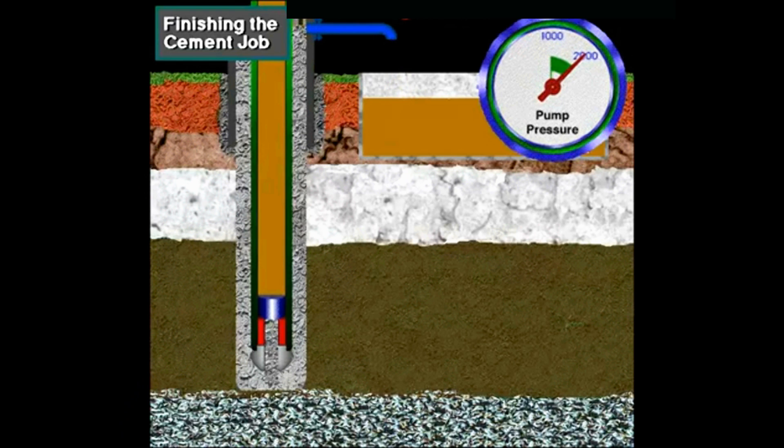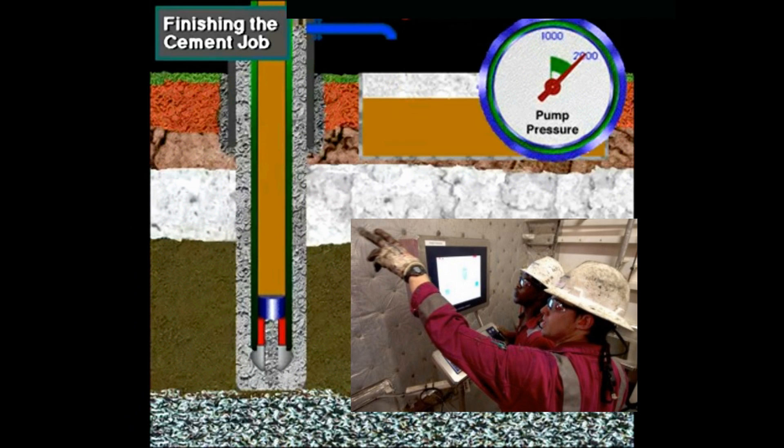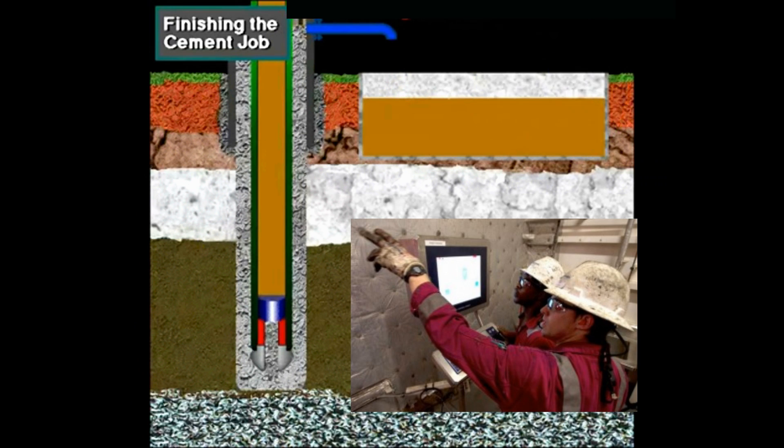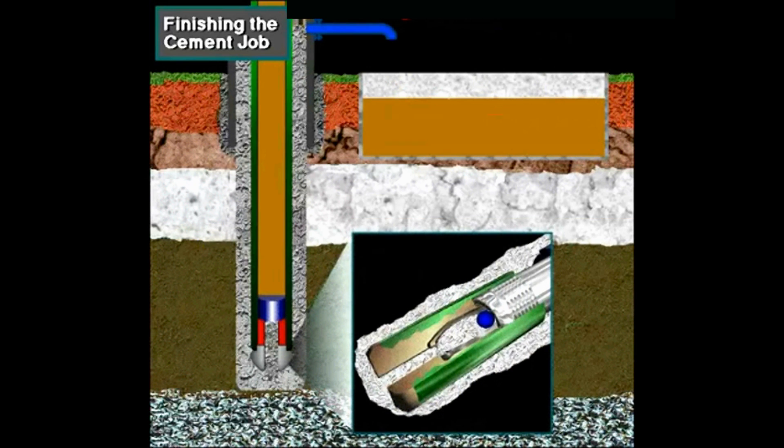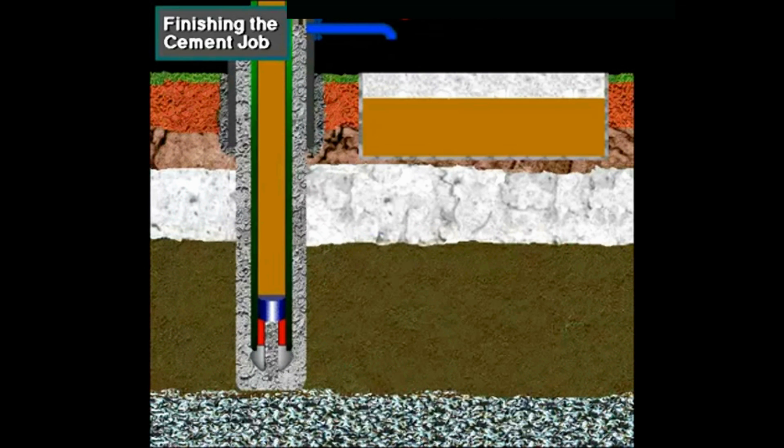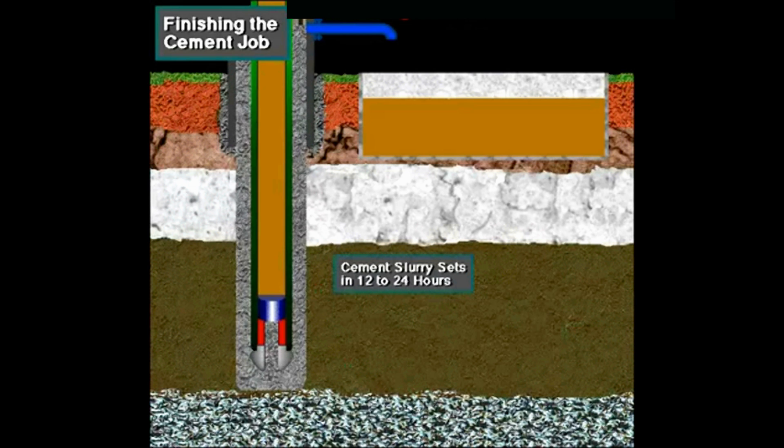The pumps are then shut down, which allows the pressure to drop. The decreasing pressure causes the float valve to close, preventing the heavier cement in the annulus from running back into the casing. After the pumps are shut down, well operations are suspended for from 12 to 24 hours so that the cement can set.